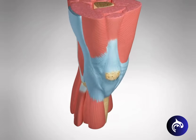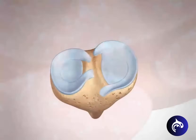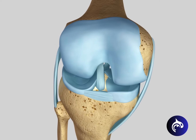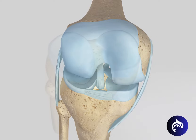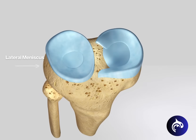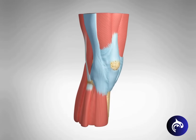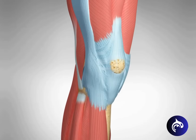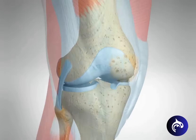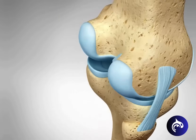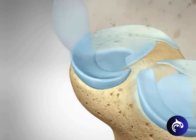The meniscus is a C-shaped piece of tough, rubbery cartilage that cushions and stabilizes the knee. Each knee has two. The lateral meniscus is more circular, and the medial meniscus is a C-shape. Both are attached at the front and back of the knee, allowing for mobility, but also making it a structure at risk of injury.